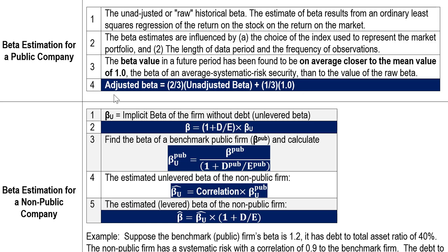In practice, it is suggested that we adjust the beta coefficient using a weighted average: two-thirds of the weight on the unadjusted beta from the regression model, plus one-third times 1.0. So the adjusted beta equals (2/3 × unadjusted beta) + (1/3 × 1.0). This adjustment is widely used in the financial industry to estimate the beta coefficient, especially for public companies.